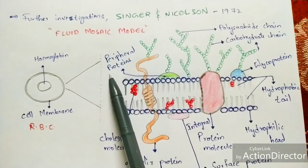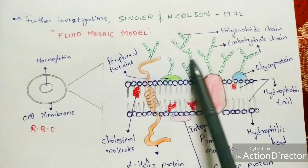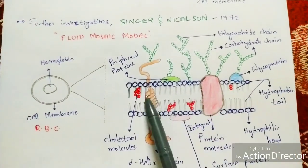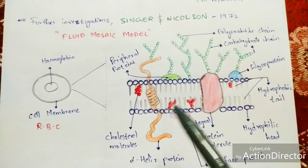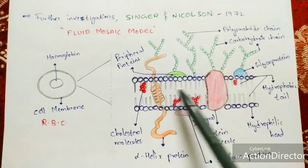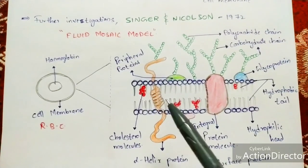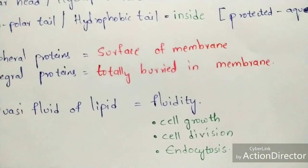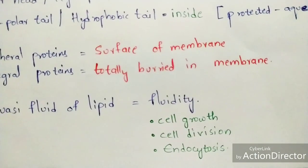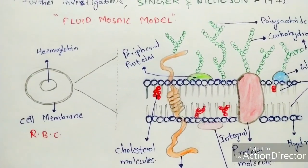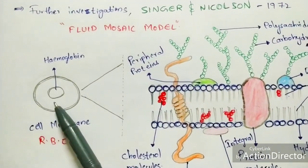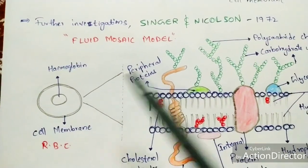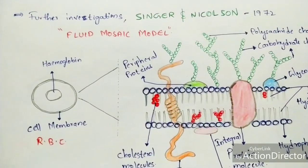Proteins from the outer environment get transported into the inside part of the cell through the quasi fluid of the lipid present between the two lipid layers. Because this fluid plays a major role, it is named the fluid mosaic model. This property is called fluidity, and fluidity plays major roles in cell growth, cell division, and endocytosis. Cell growth occurs because proteins transported into the cell promote automatic growth.